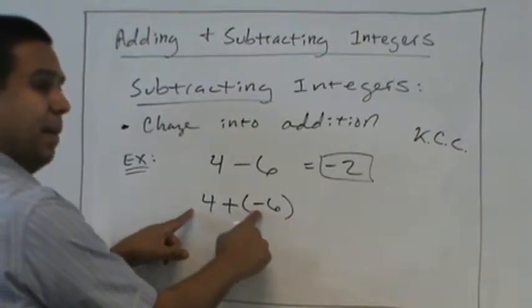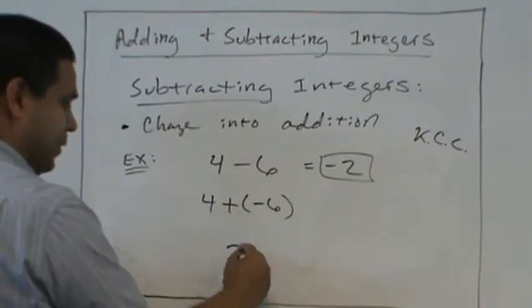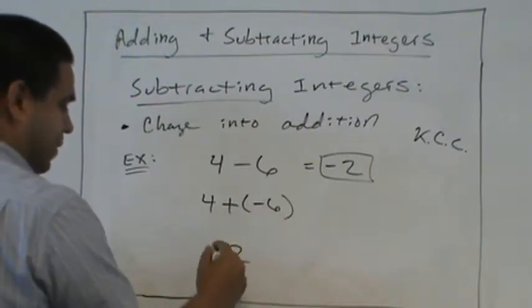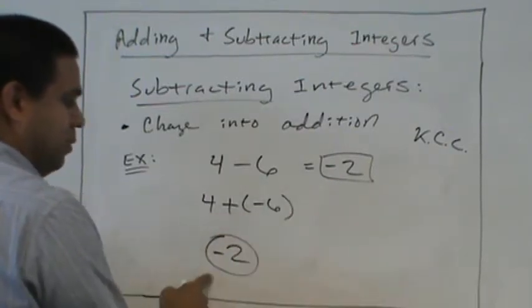Same sign or different sign? Different. Different. So we subtract. Which one's bigger? 6. It's negative. It's negative. So it's negative 2. Okay.